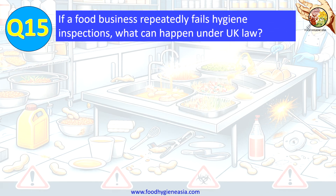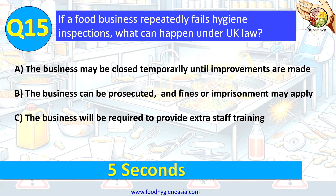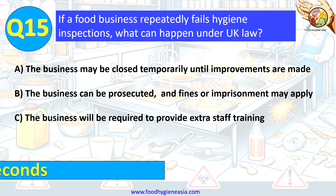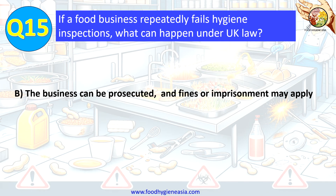Question 15. If a food business repeatedly fails hygiene inspections, what can happen under UK law? A. The business may be closed temporarily until improvements are made. B. The business can be prosecuted and fines or imprisonment may apply. C. The business will be required to provide extra staff training. The correct answer is B. The business can be prosecuted and fines or imprisonment may apply.